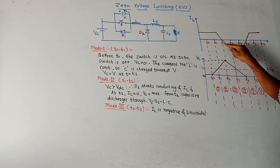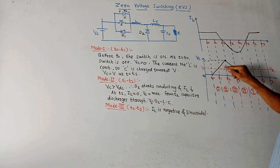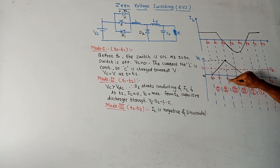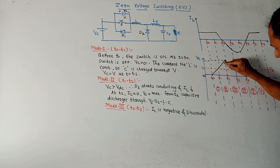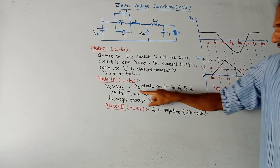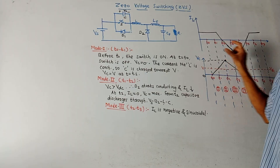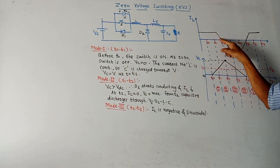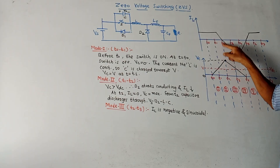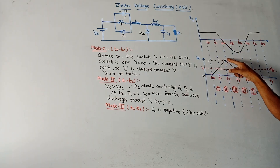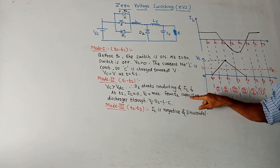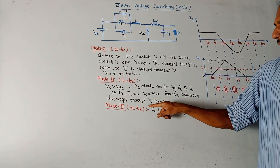Mode 2 is from T1 to T2. VC is greater than VDC during this interval, so diode D2 starts conducting and IL starts reducing. At T2, IL becomes 0 and VC becomes VC_max. From T2 onwards, the capacitor discharges through the path VS, D to L, C.